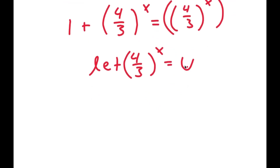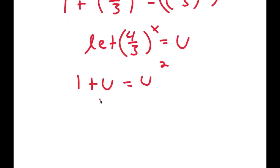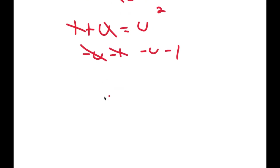So if I substitute u in for 4 over 3 to the power of x, I get 1 plus u is equal to u squared. And now if I subtract u and 1 on both sides, these terms cancel out and I get u squared minus u minus 1 is equal to 0.